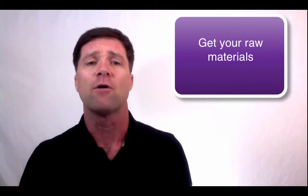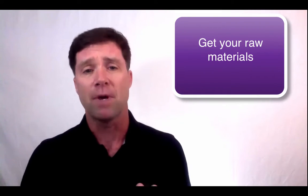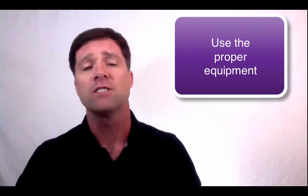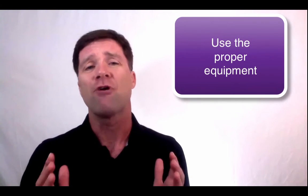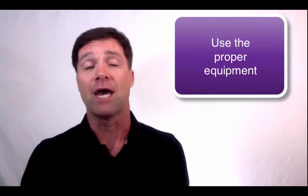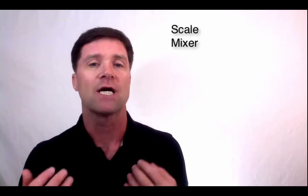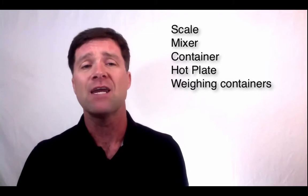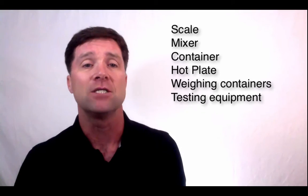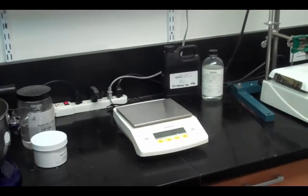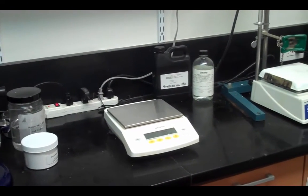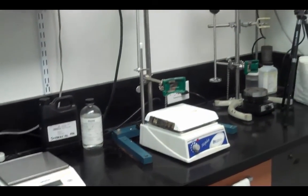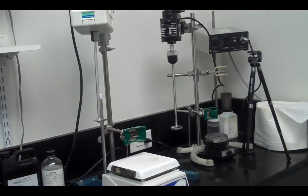After that, you'll have to gather up all the raw materials needed to make the batch. In addition to the formula and raw materials, you need the proper equipment. For making batches, this means you'll need a scale, a mixer, a container, a hot plate, weighing containers, a pH meter, and a few other things to make it easier. Professionals all use center stir mixers, but a number of at-home formulators will use things like stick blenders. These are not ideal, but you can make some formulas with them.